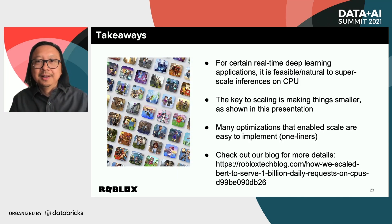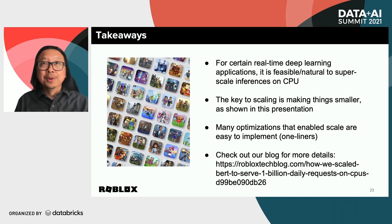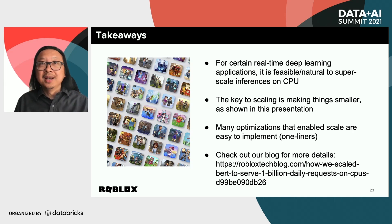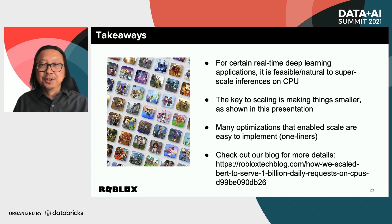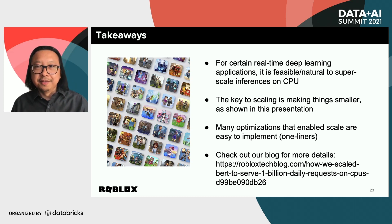So that's all we have for you today. There are some key takeaways we'd like to leave you with. The most important thing is that real-time deep learning applications are feasible and natural to super-scale on CPU. As Kip mentioned, that was a little bit of a surprise to us, but it's very economical and works really well for a lot of applications.